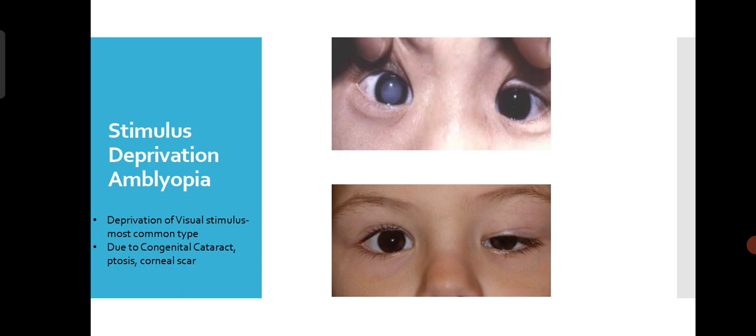For stimulus deprivation Amblyopia: a unilateral cataract, if not operated on, will deprive that eye of visual stimulus and it can develop into Amblyopia in later stages. We need to operate on congenital cataracts at the earliest. Similarly, ptosis — meaning drooping of the upper lid — causes deprivation of visual stimulus and that eye may become Amblyopic if not operated on at the earliest.